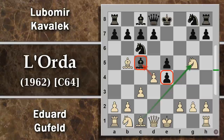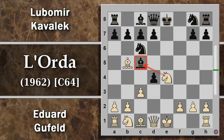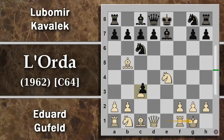Se il nero prova a giocare d4, cercando di sfondare sull'altro lato, con cavallo per e4 si attacca l'alfiere e il bianco guadagna un tempo. L'alfiere si deve spostare con rocade, e il bianco non ha grossi problemi, anche perché se il nero continua a catturare materiale, il bianco continua a sviluppare e il vantaggio strategico di sviluppo per il bianco è notevole.